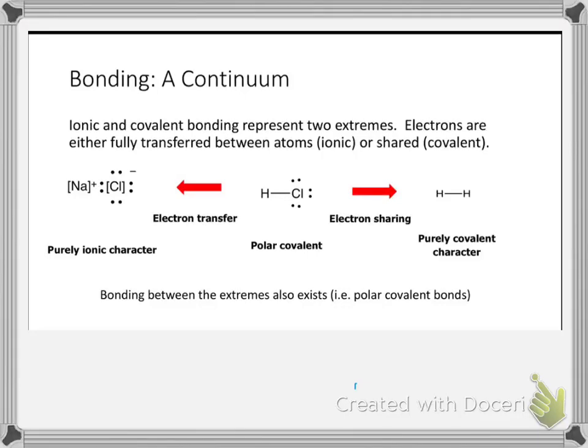We have been discussing the two major types of bonding. Ionic bonding occurs between metals and nonmetals and involves the transfer of valence electrons. Covalent bonding occurs between nonmetals and involves the sharing of electrons. These are the two extremes in bonding: on one side we have a transfer of electrons, and on the other side we have equal sharing of the electrons.